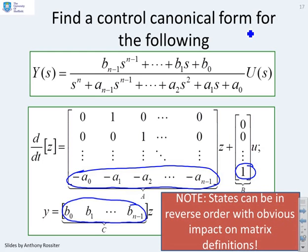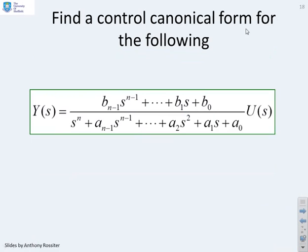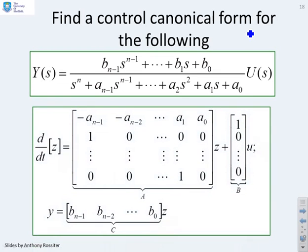Now, just for completeness, we're going to show that the states can be put in the reverse order. So here I've used the ordering of states which goes x, x dot, x double dot and so on. You can, of course, put the states in the opposite order and put the coefficients here on the top row. So you'll see now I've started from a n minus 1 down to a 0.